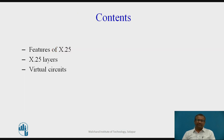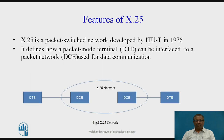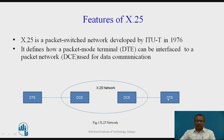In the following slides, we will discuss features of X.25, X.25 layers, and virtual circuits. Looking at this diagram, this is an X.25 network which consists of DCE — Data Communication Equipment — and DTEs, that is Data Terminal Equipments, connected to these DCEs. The network consists of DCEs and communication takes place between two DTEs. X.25 is a packet switch network developed by ITU-T in 1976.